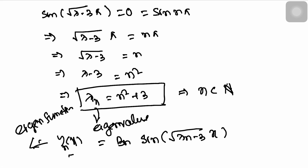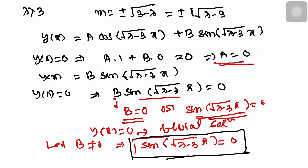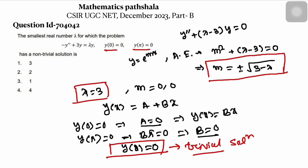This is a non-trivial solution. When n = 1, lambda is smallest; for larger n it increases. So lambda₁ = 1² + 3 = 4. Therefore, the smallest value of lambda is 4. Looking at the options, option 4 should be correct and other options should be false. Thank you for watching this video, thank you very much.